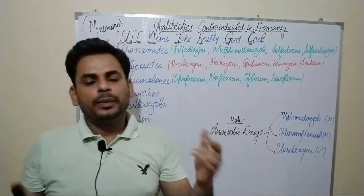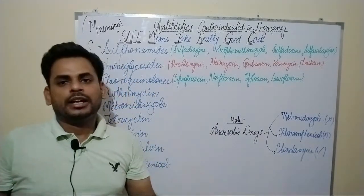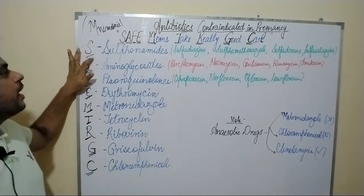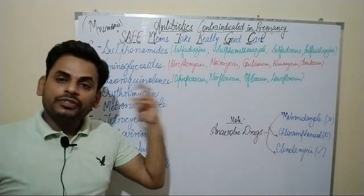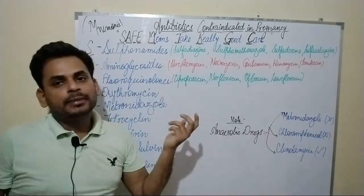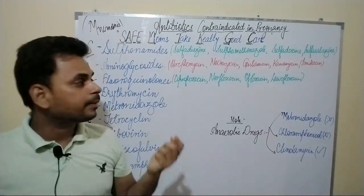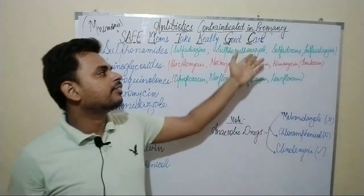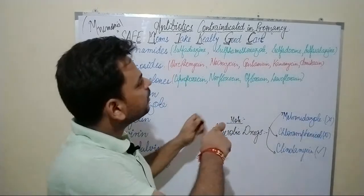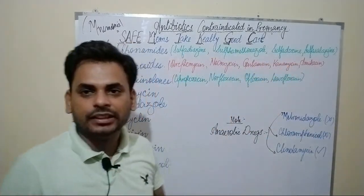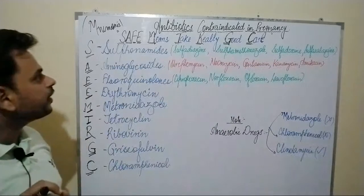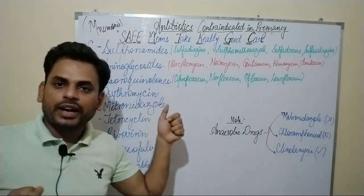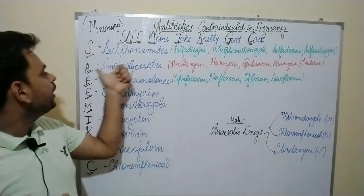Starting with the S of 'safe' — it refers to the sulfonamide drugs. Sulfonamides are antibiotics contraindicated in pregnancy. Among the sulfonamides we have sulfadiazine, sulfamethoxazole, sulfadoxine, and sulfasalazine. So these are the drugs the S of 'safe' is referring to — sulfonamides, which are contraindicated in pregnancy.